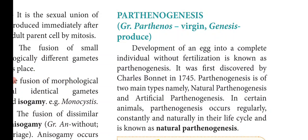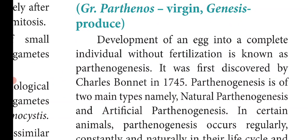In sexual reproduction, the male gamete sperm fertilizes the female gamete ovum. The fertilized egg or fertilized ovum is called a zygote, and the zygote develops into a new organism. But in the case of Parthenogenesis, the development of an egg into a complete individual occurs without fertilization. So without fertilization, a new organism develops from an egg — this is called Parthenogenesis.